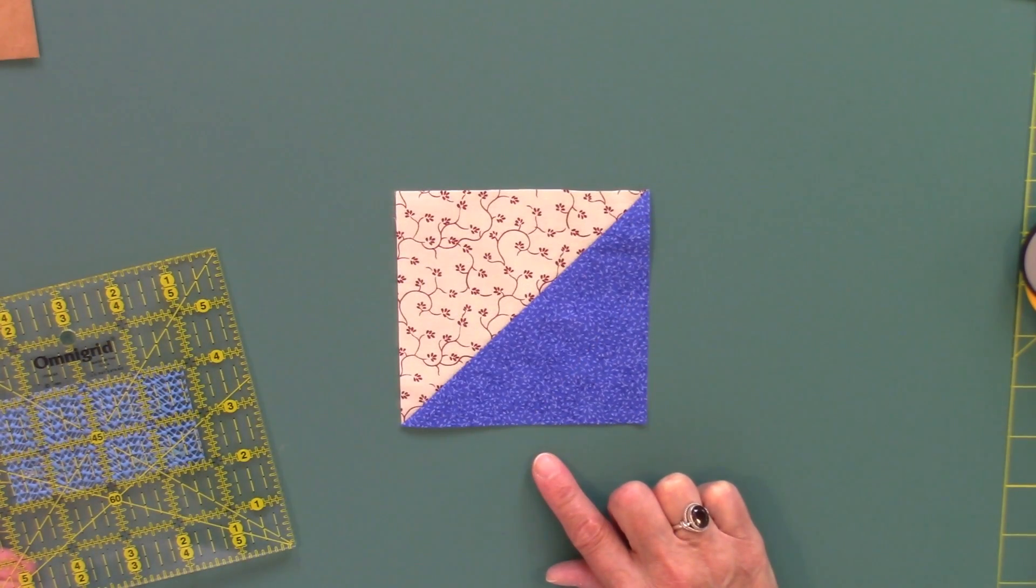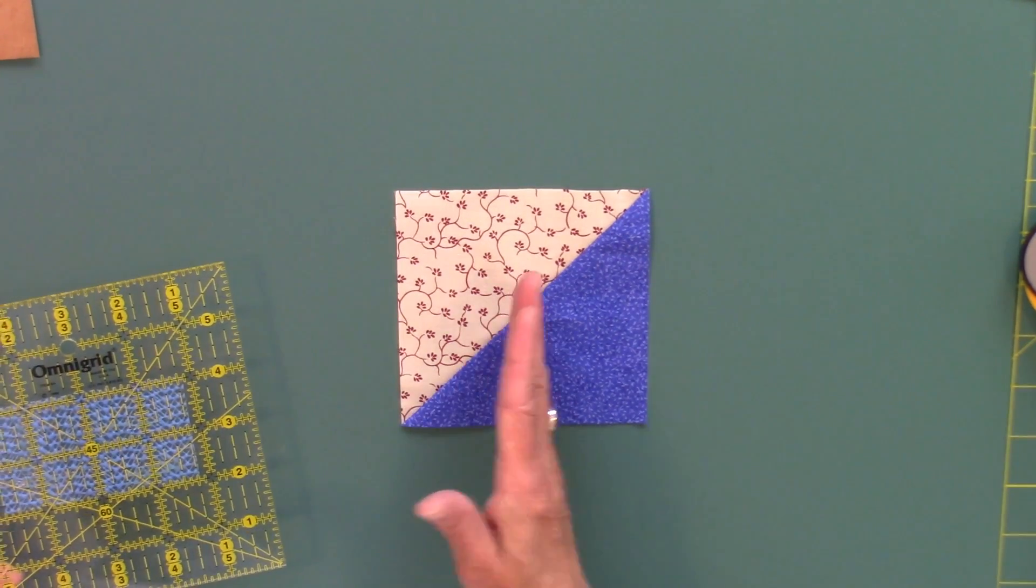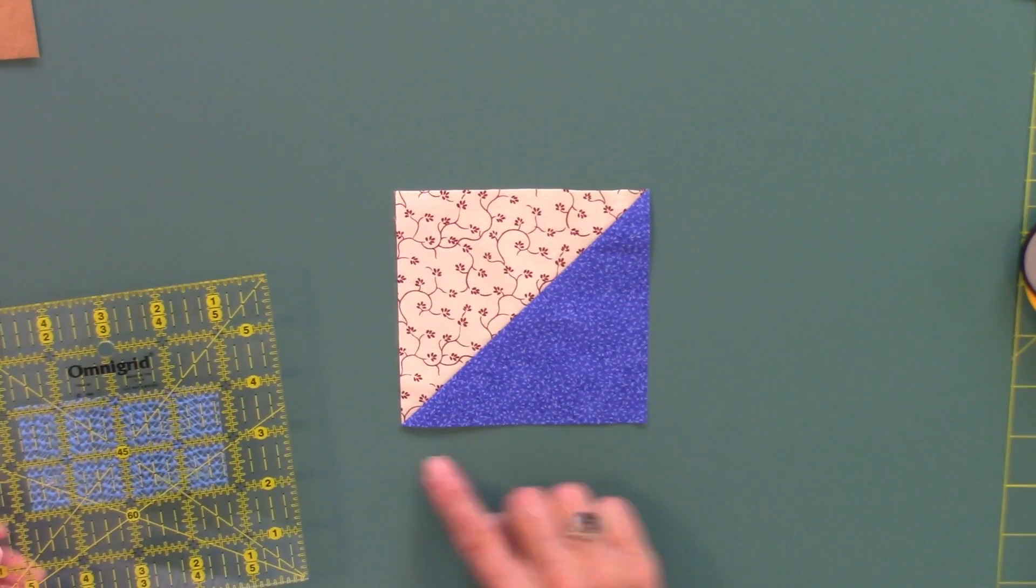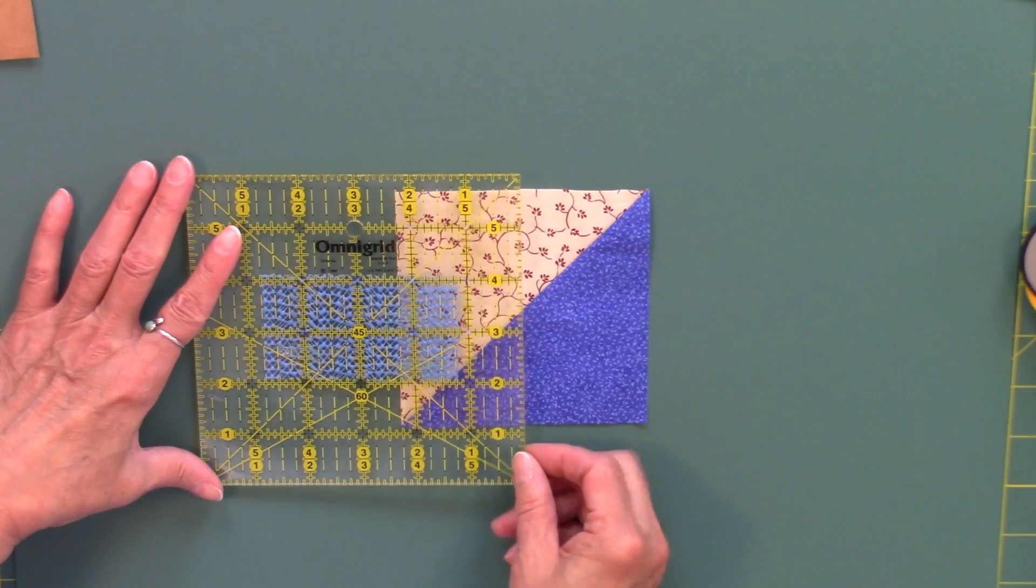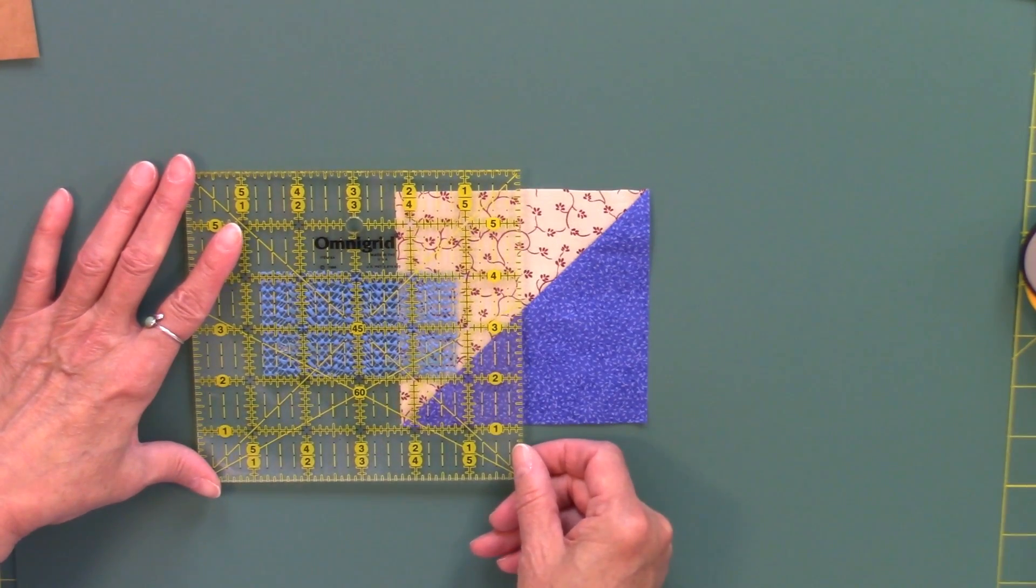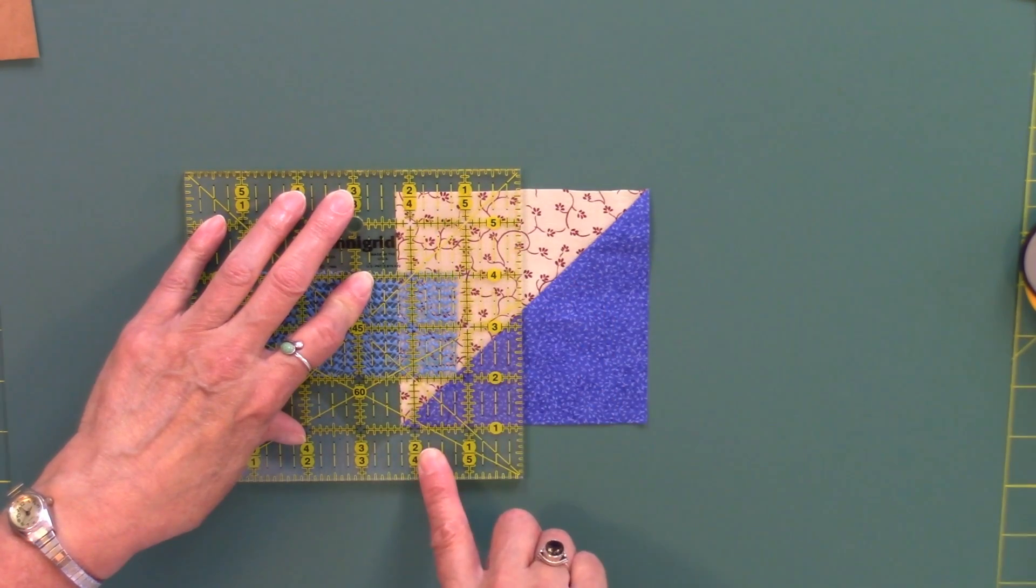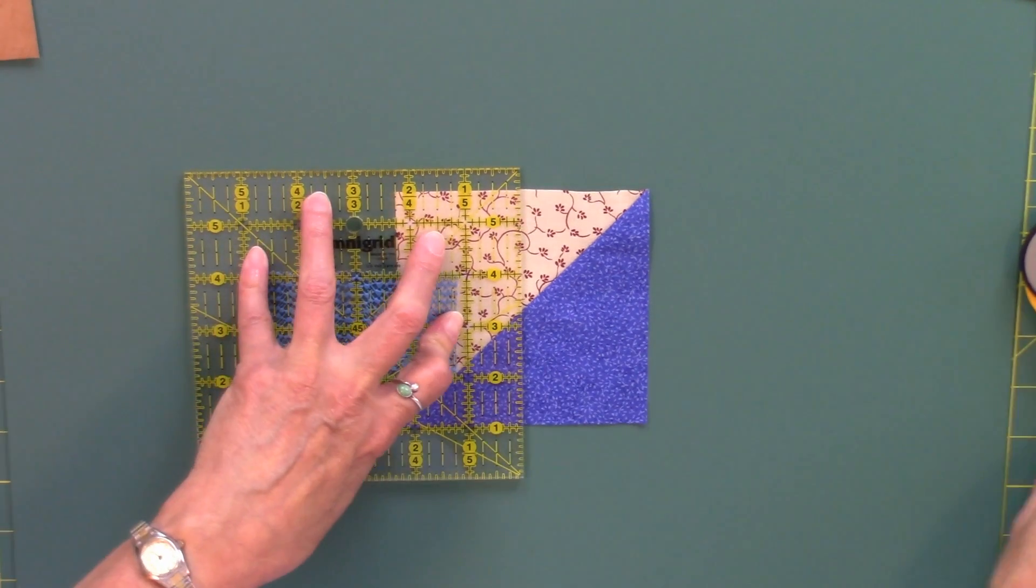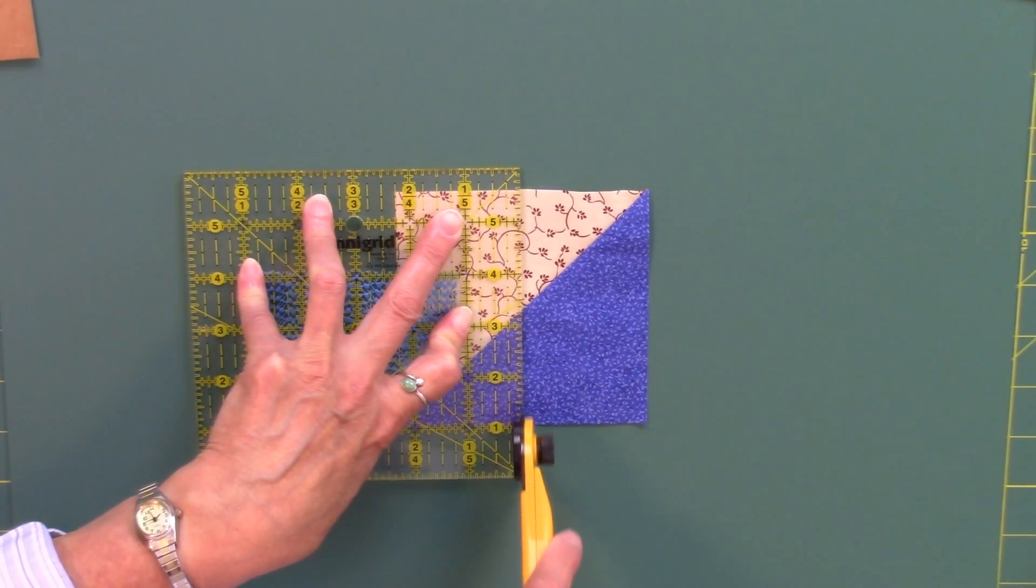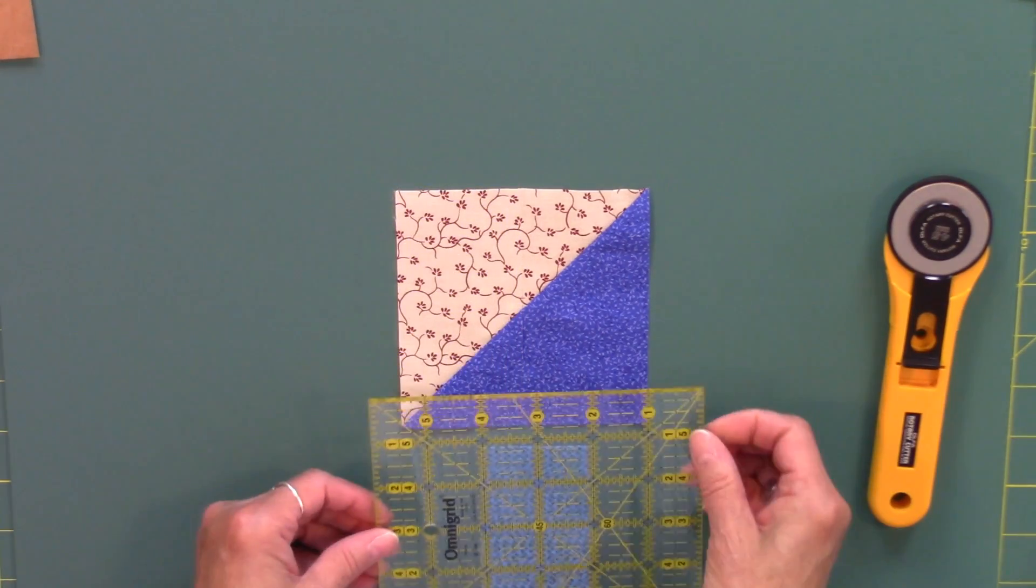Our trimmed half square triangle is now going to be sub cut in half in one direction and in half the other direction. This is four and a half inches so half of that is two and one fourth inches, two and a quarter inches and I'm going to lay the ruler right on the edge of the unit at the two and a quarter inch line and give this a cut nice and slow.